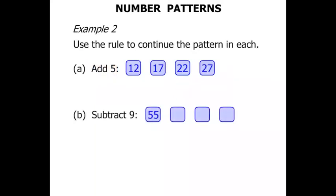The next one. We need to subtract 9. So starting with 55 let's take away 9. We get 46. From 46 when we subtract 9 we get 37. With 37 now we need to subtract 9 we get down to 28. Terrific!